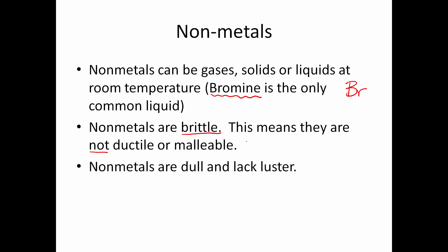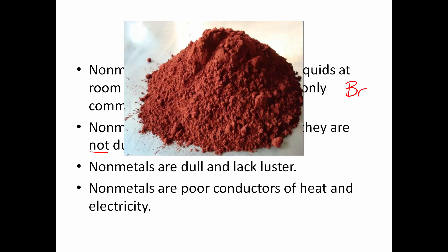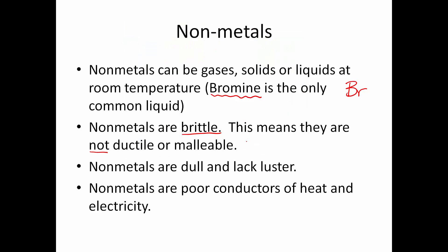Nonmetals are also dull and lackluster — they do not have shine. On top of that, they are also poor conductors of heat and electricity. Their electrons aren't mobile. Without mobile electrons, you're not going to be able to conduct electricity, you're going to be a bad conductor of heat, and you're not going to be able to bend.